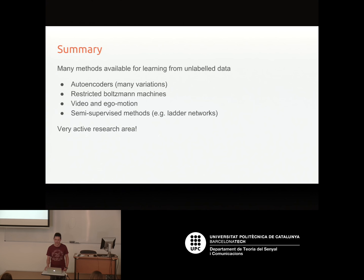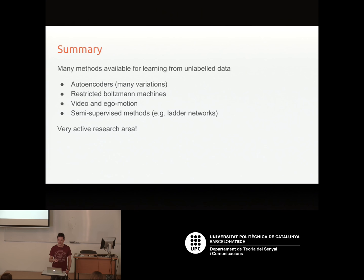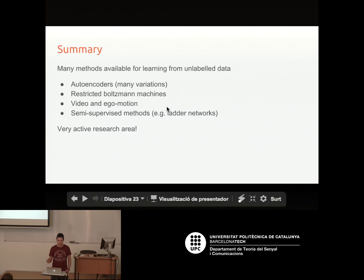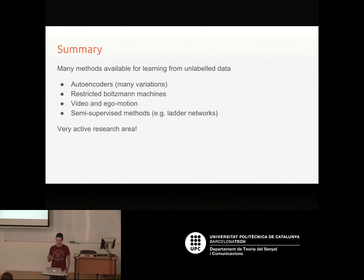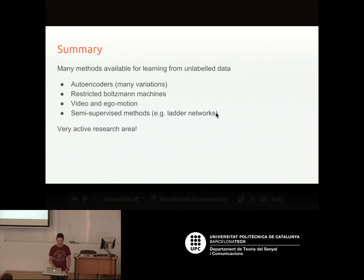In summary, there are many methods available for learning from unlabeled data. We have autoencoders, which this lecture mainly covered, and restricted Boltzmann machines — which are similar to autoencoders but require contrastive divergence rather than backpropagation — and these can be stacked to produce deeper networks. There is a lot of interest in learning from video and from ego motion, where actively engaging with the environment — like controlling a robot — can speed up learning. Semi-supervised methods like ladder networks show really promising results, and this is all a very active research area.